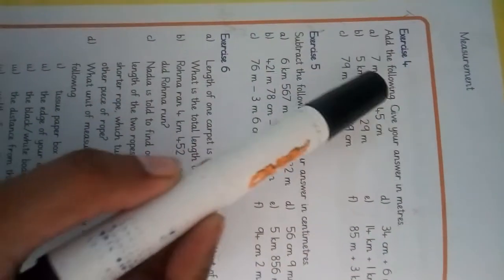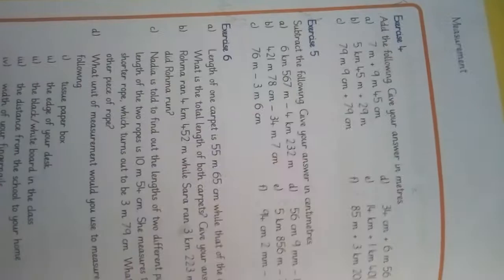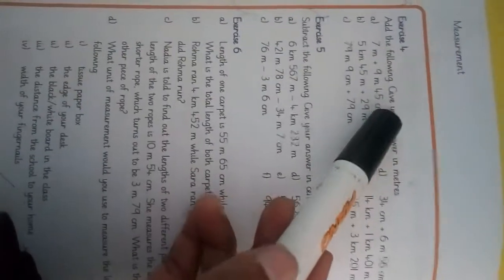Class, as you remember, we are doing our Unit 5 measurement. And today's exercise is 4 and 5. Today we will do exercise 4 and 5. Exercise 4 said that add the following, give your answer in meter. Firstly we will add these two values and we will give our answer into meter, means we have to change this centimeter into meter as well.